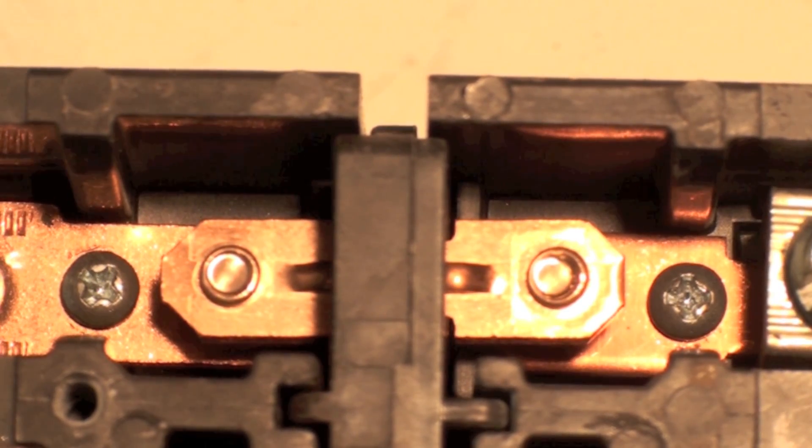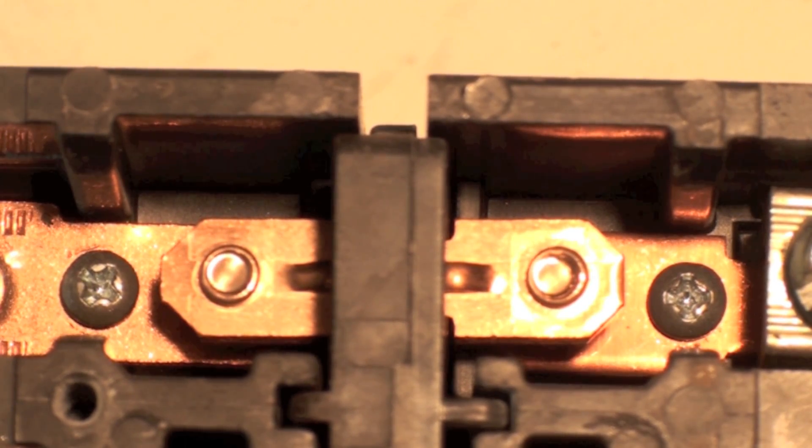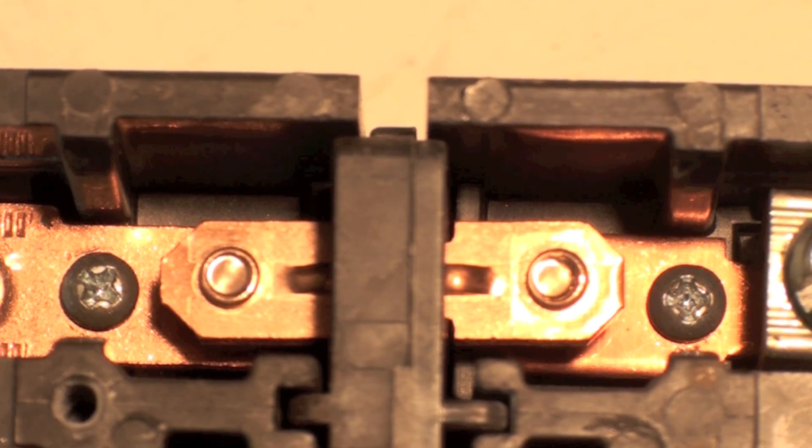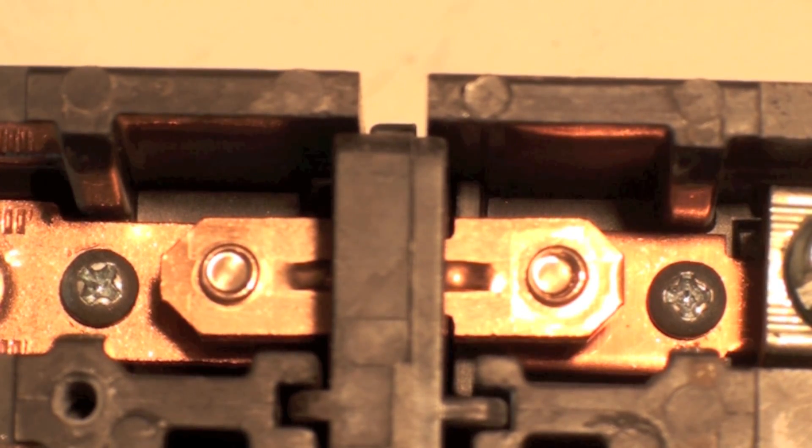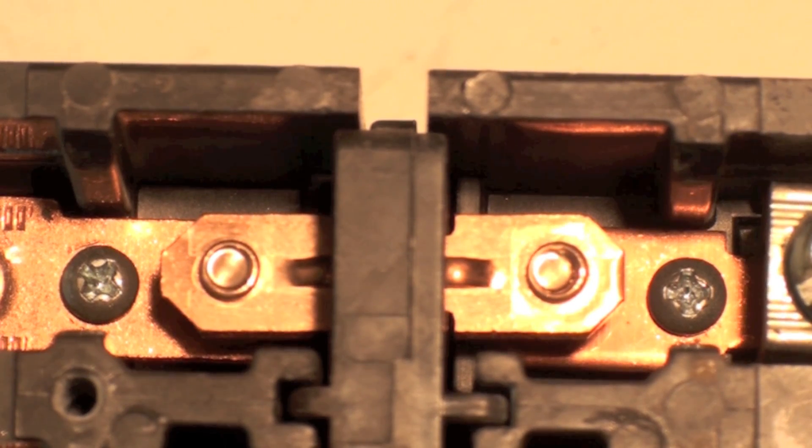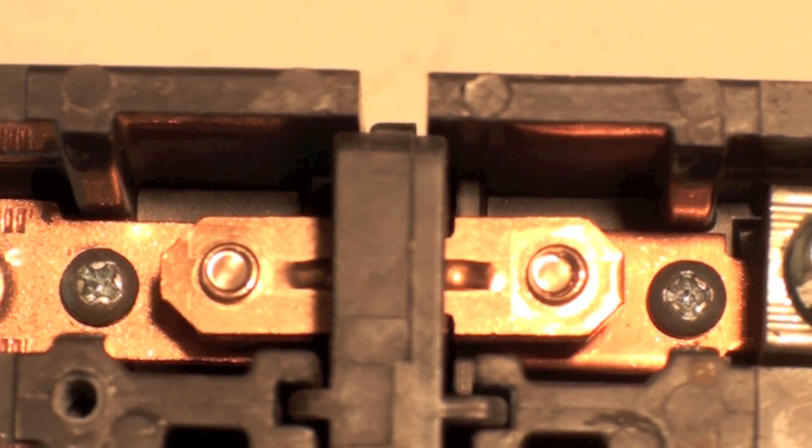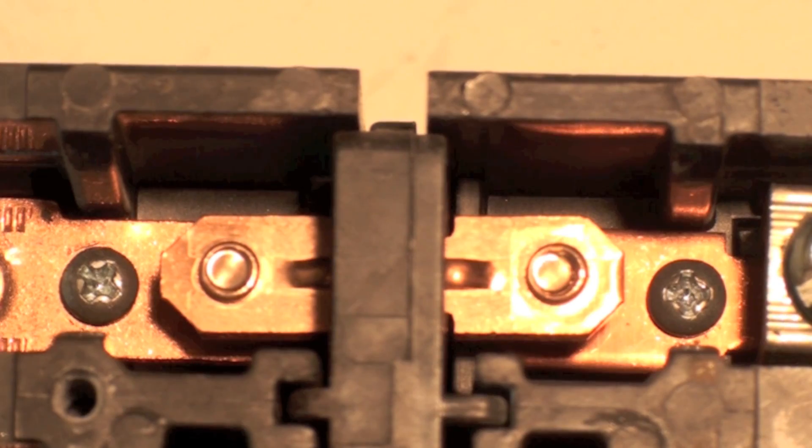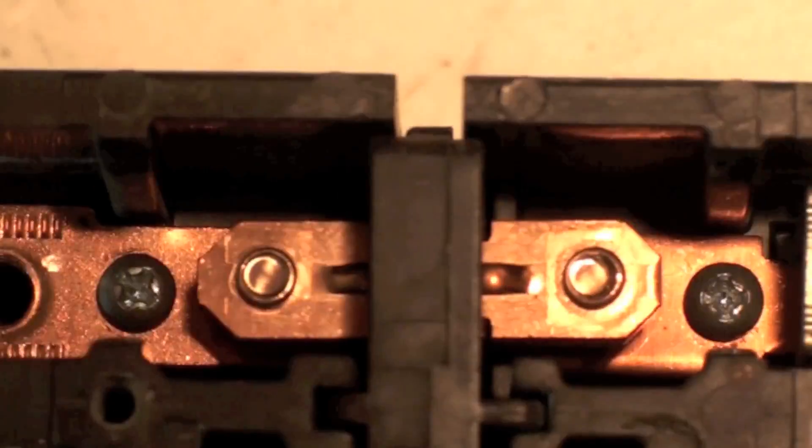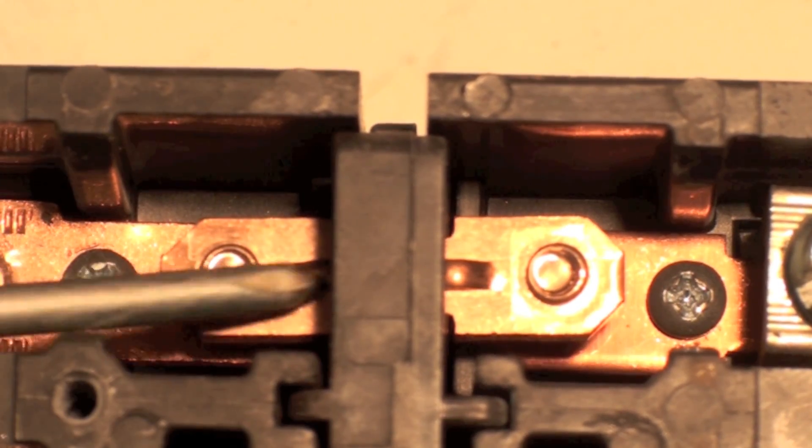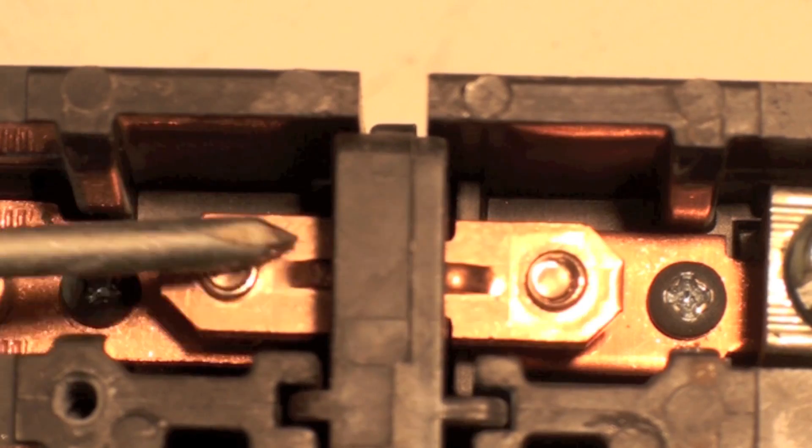Now you can see those, those look good. No problem with those things at all. There's no discoloration, there's not even any black around it. The black is not as important as the discoloration of the bar itself here. This isn't discolored at all.